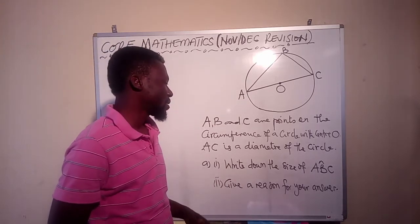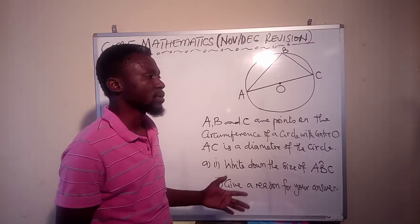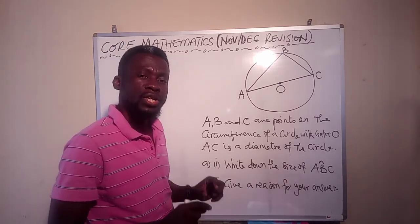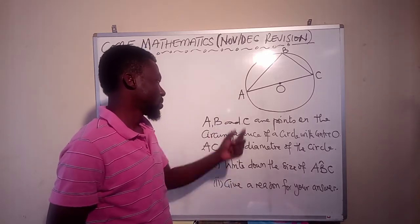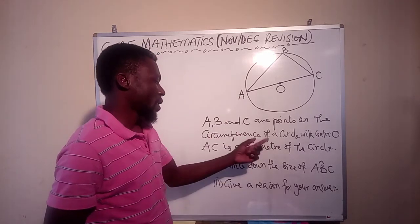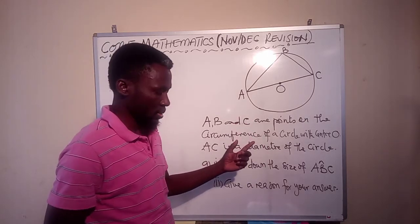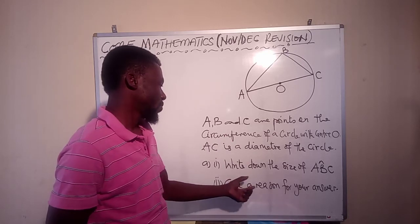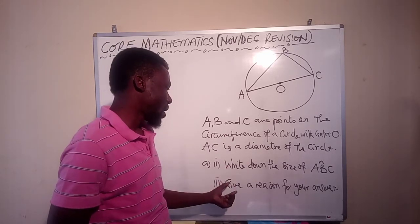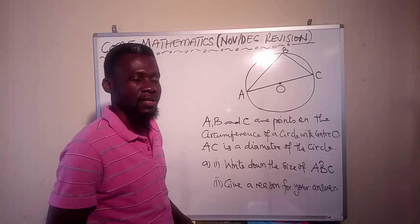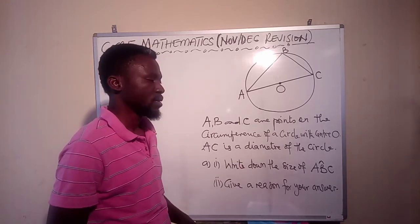Now here they ask us to write down the size. It means we are not calculating anything. We have to write down. That means there is a theory based on which we are writing down what angle ABC is. And after writing what angle ABC is, we should be able to state that theory or that rule that informed our decision of writing down a particular number as an answer to ABC.